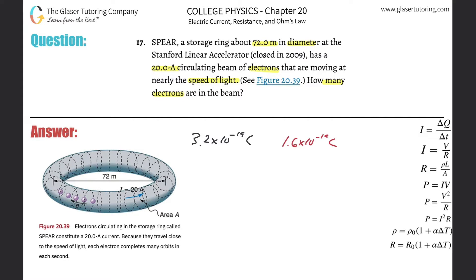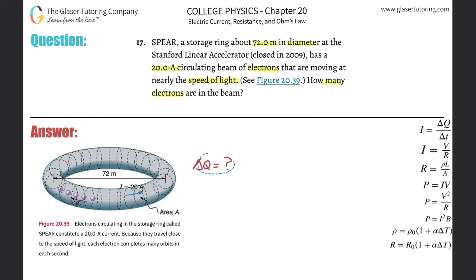So that might be an interesting way to solve for the number of electrons — instead of thinking about how many electrons there are, why don't we focus on what is the charge, or what's the change in charge passing through a particular point? Once we do that, we might then be able to look at some of the other information in the problem, like — oh, they're giving me current. And I need to find the change in charge passing through a point.